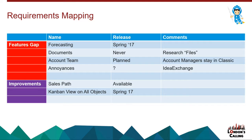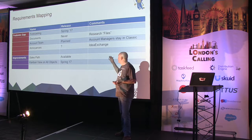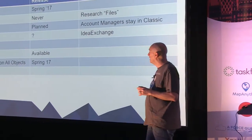That's the legwork — analyzing the feature gap and taking into account the improvements. For the feature gap, there are several cases. First, you've got a clearly identified missing capability, like forecasting, but you know it's scheduled for release in Spring '17. In that case you can plan — if forecasting is part of your solution, wait for Spring '17 before moving to Lightning. Then there's another case, like Documents, which are officially stated as 'will not move to Lightning.' In that case you need a Plan B — research whether Files will do the trick for you.